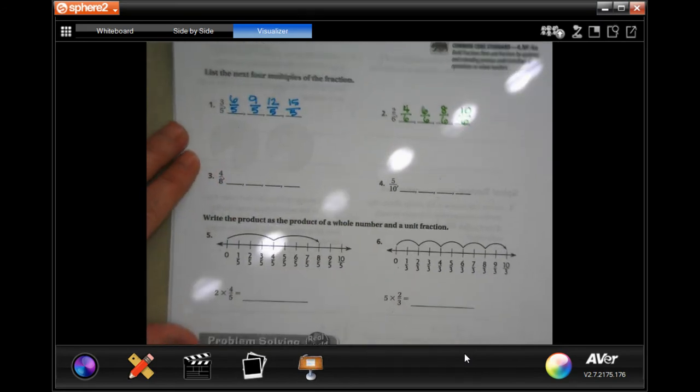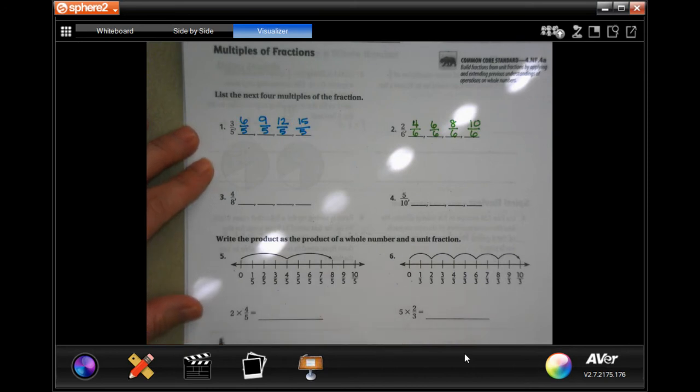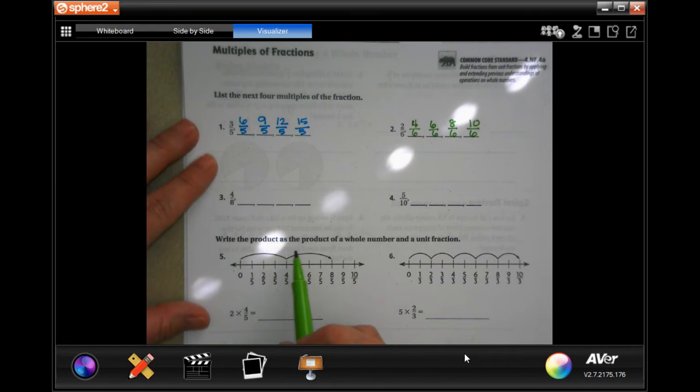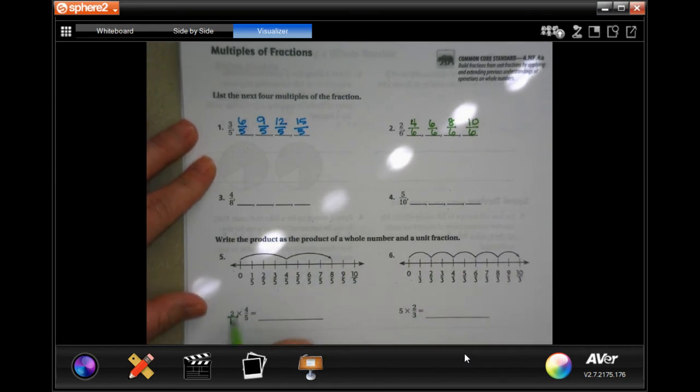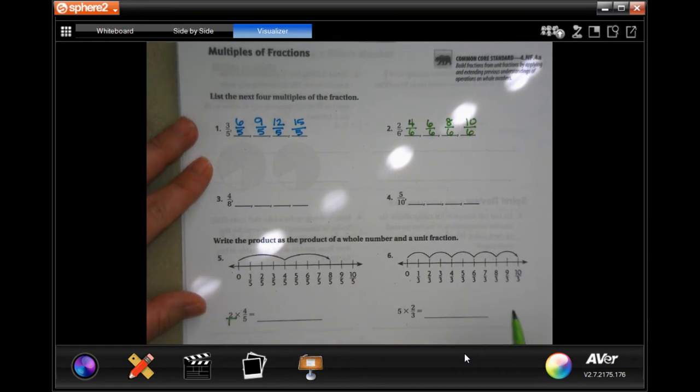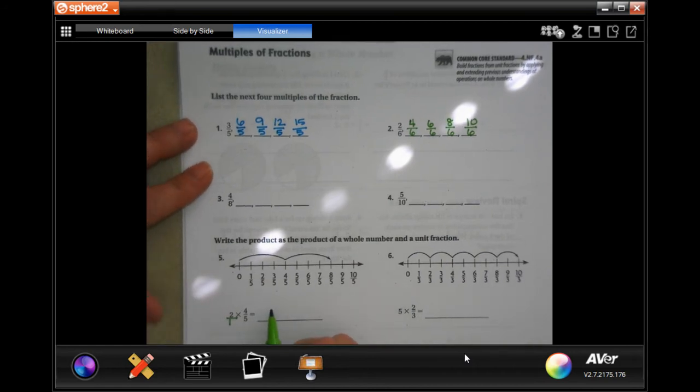All right, so now it says to write the product as the product of a whole number and a unit fraction, so we're just multiplying. Well, let's put that two over one. And now two times...